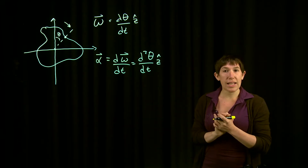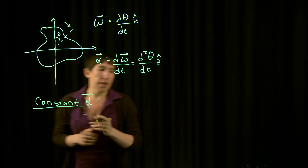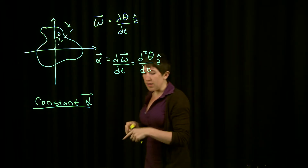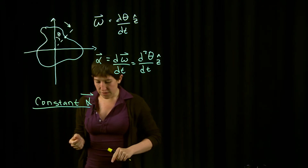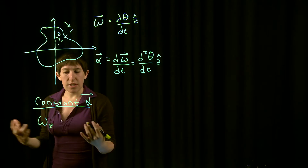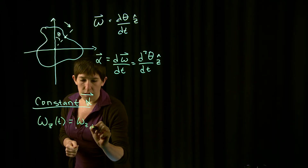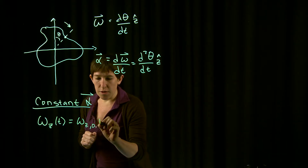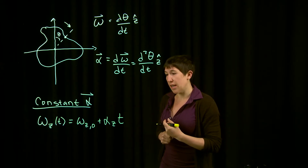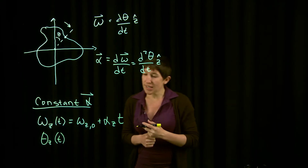The next thing to consider is constant angular acceleration — some alpha that is constant while omega is changing in time. Just as constant linear acceleration led to a set of kinematic equations, we have a similar set for constant angular acceleration. Considering one component at a time, the z-component of angular velocity as a function of time is simply omega_z(t) = omega_z0 plus alpha_z times t, where alpha is a constant value.